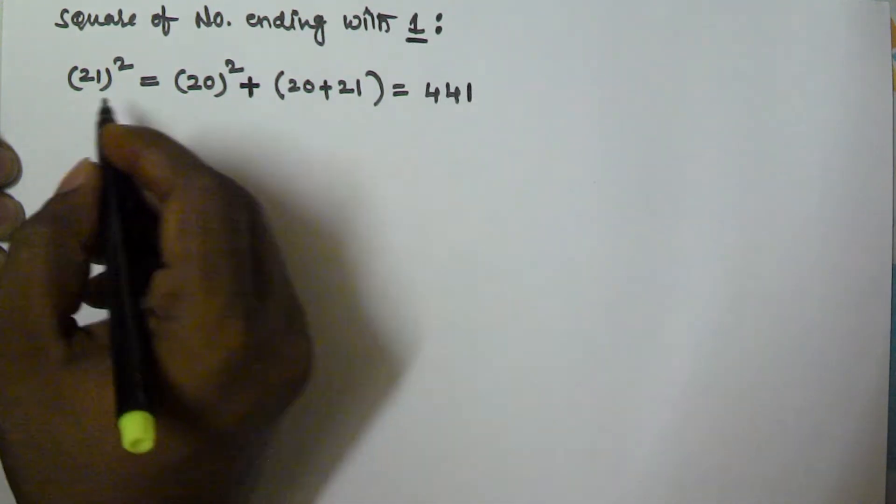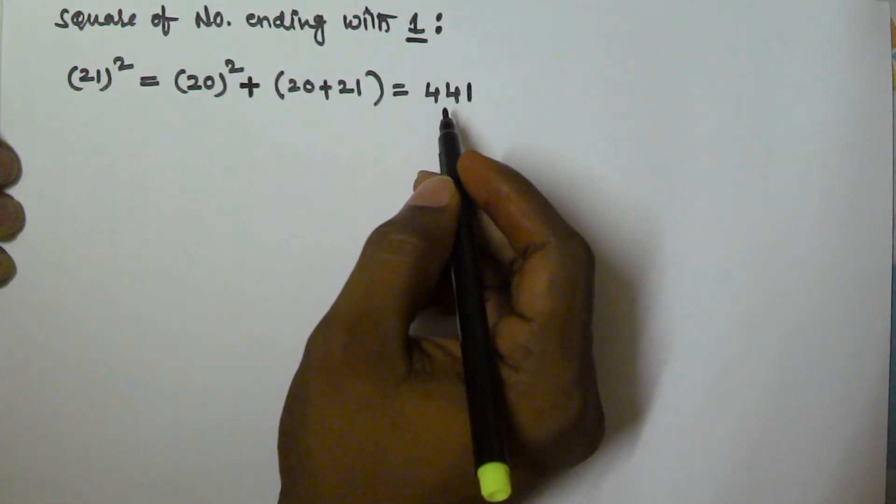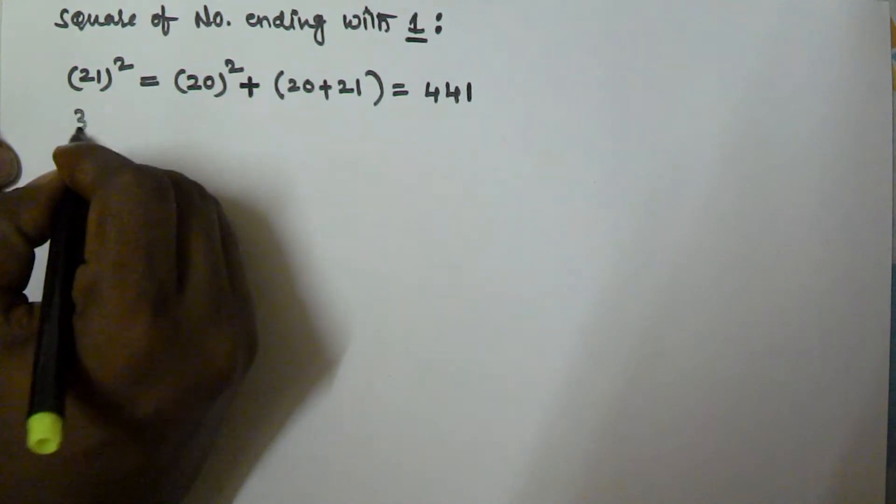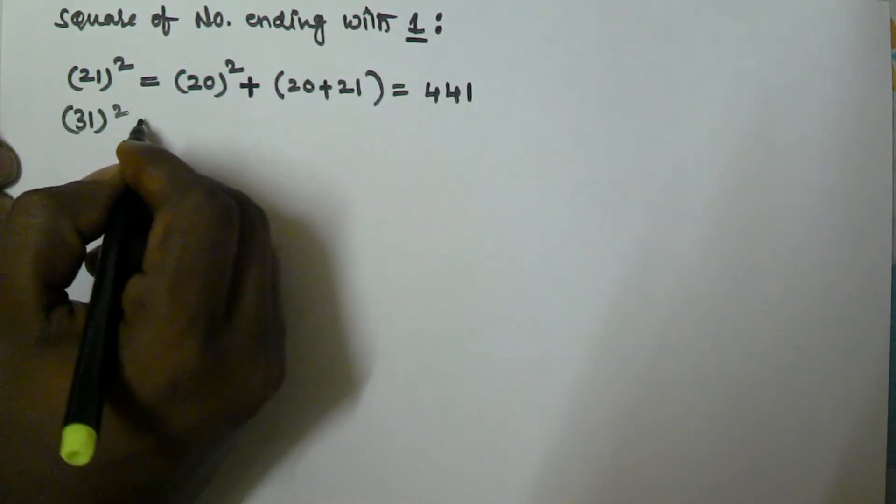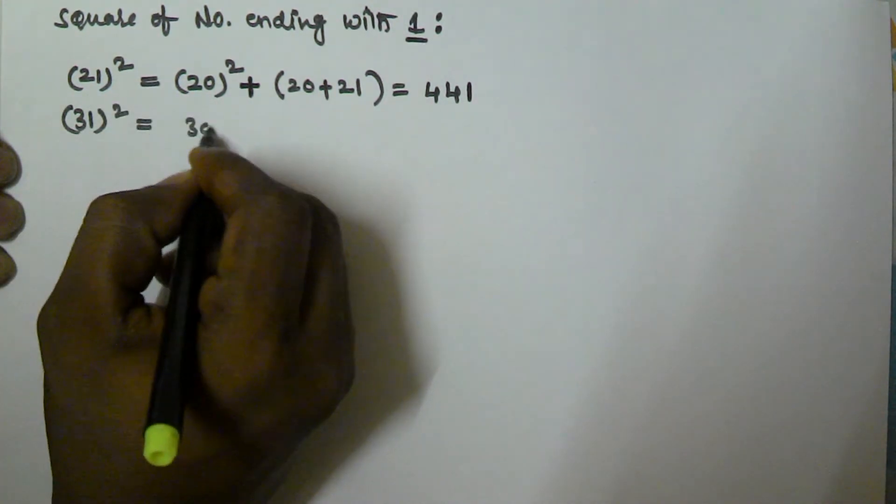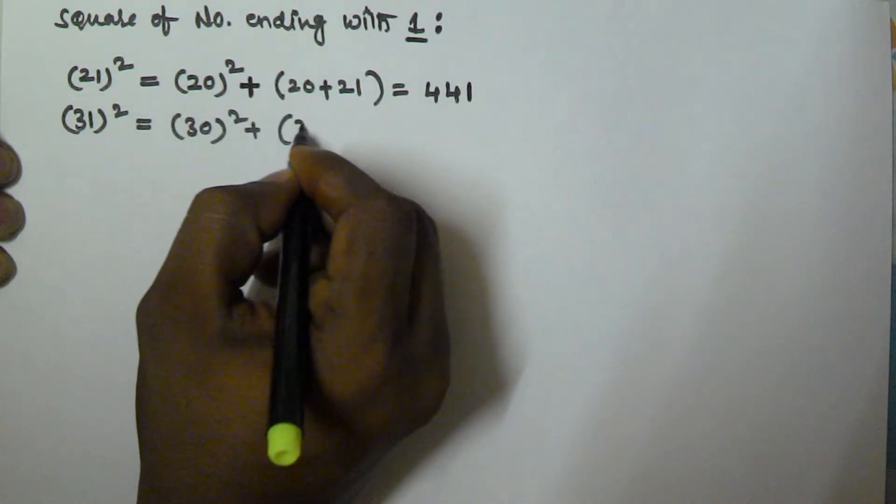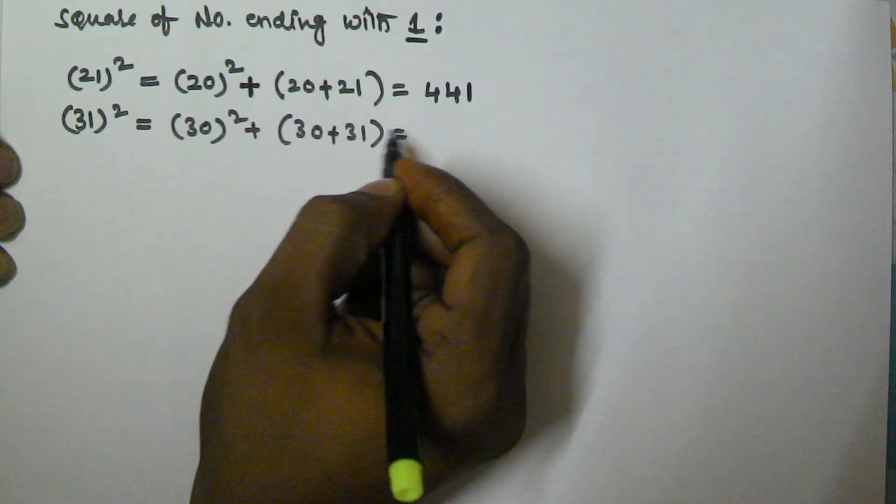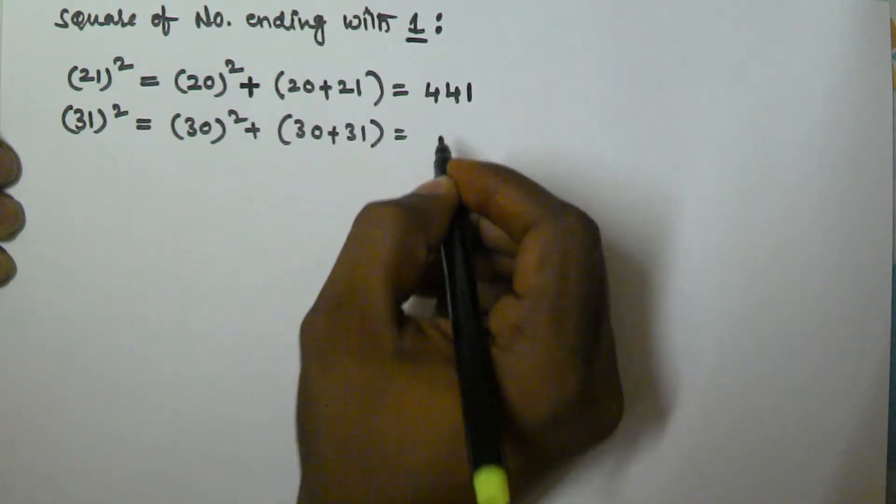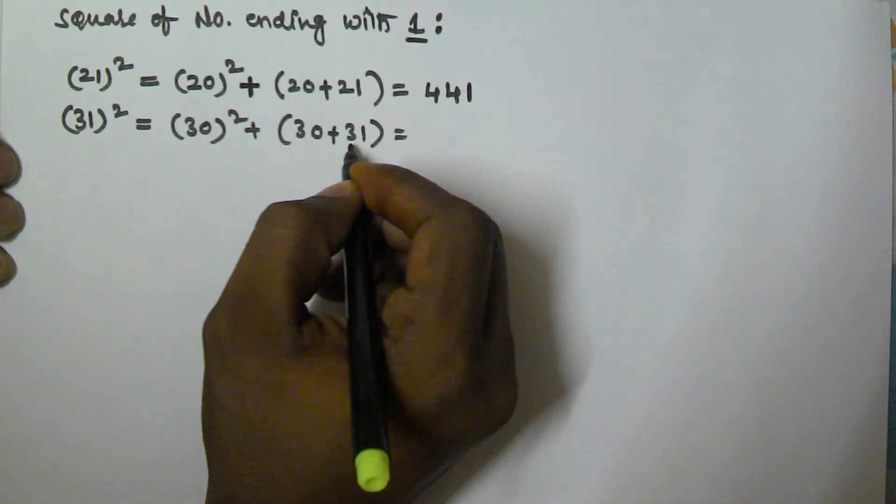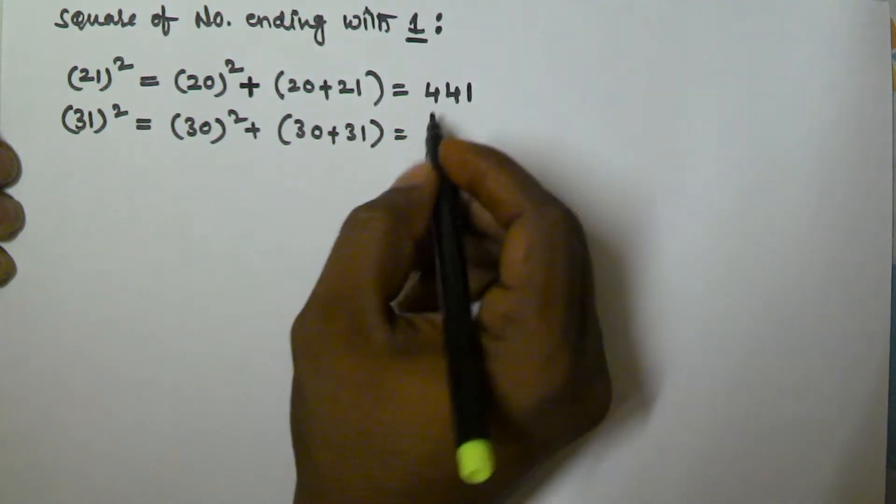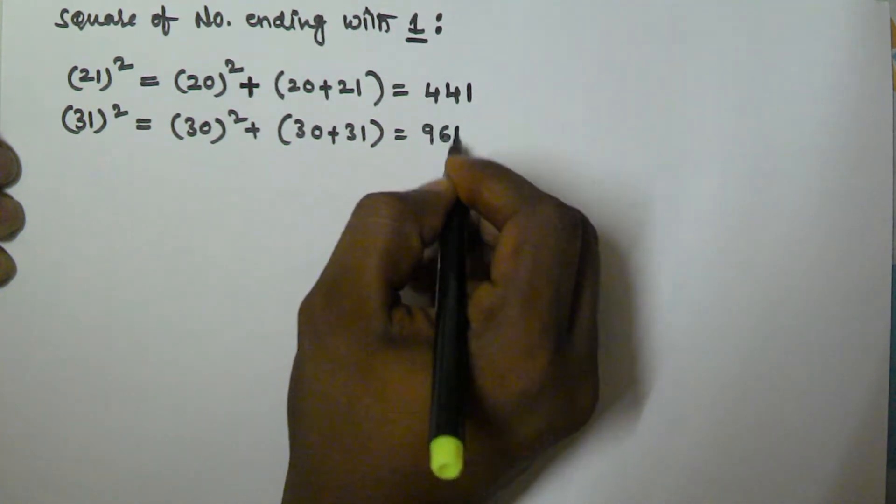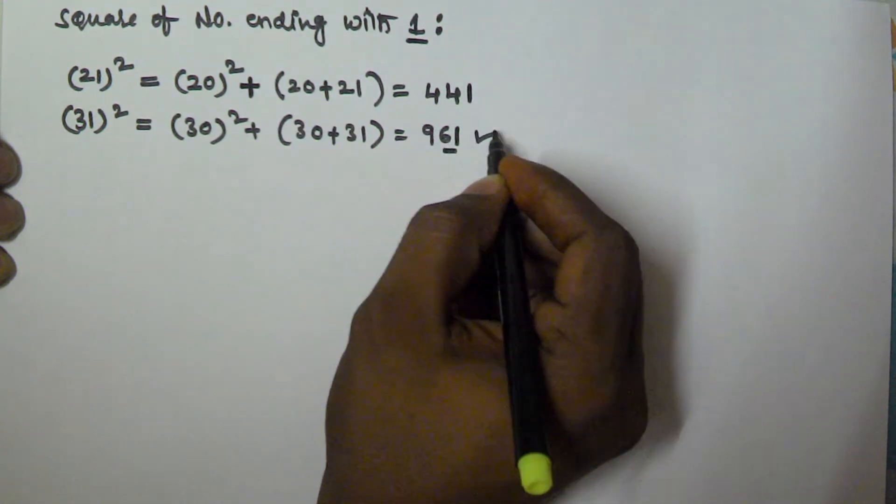Let's take 31 square. So 31 square is equal to 30 square plus 30 plus 31. So 30 square is going to be 900, 900 plus 30 plus 31, so that is 61, so 961. So 31 square is 961.